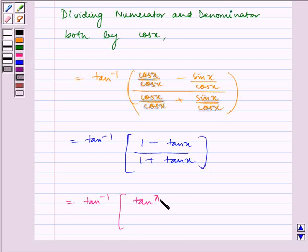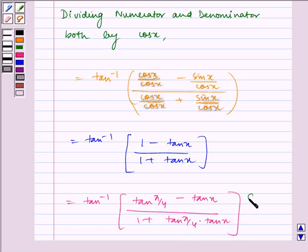This equals tan inverse of (tan π/4 - tan x)/(1 + tan π/4 · tan x), because tan π/4 is equal to 1.